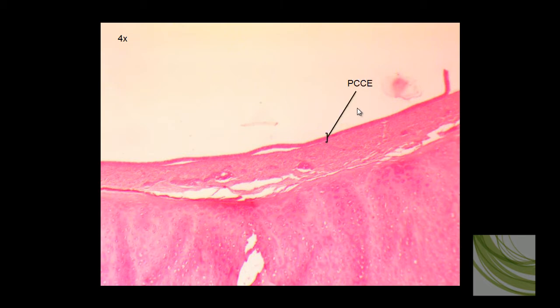Again, here is the exact layer, this darker layer of pseudostratified ciliated columnar epithelium. So we're going to want to zoom in there.